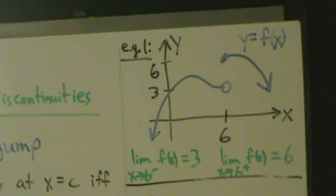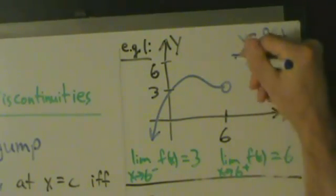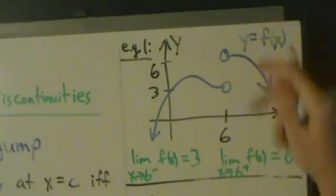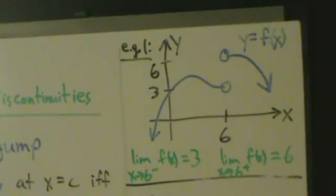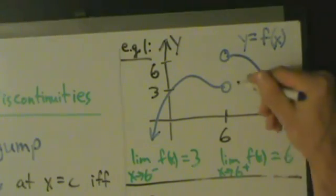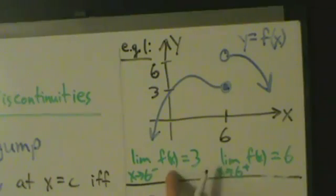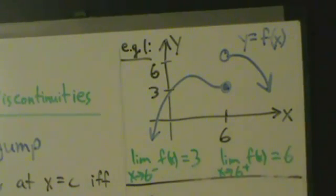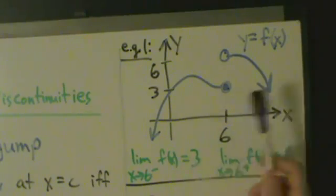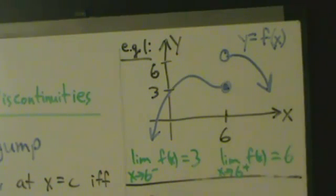What if we changed it? Notice there's a filled-in circle up here — what if we changed it so that this was a hollow circle? So now the function isn't defined at 6. Nothing changes: the left limit is still the same, the right limit is still the same. What if we made the circle filled in? Still nothing changes — left limit is the same, right limit is the same, they're not equal to each other, so there's still a jump discontinuity. It doesn't matter if the function is defined or not at the point; all that matters is what's going on with the one-sided limits.